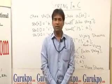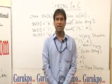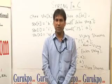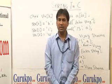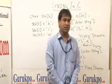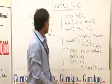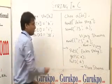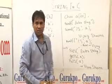A string in C is an array of character values terminated by a special null character value, that is null. This is the null character which terminates the string.